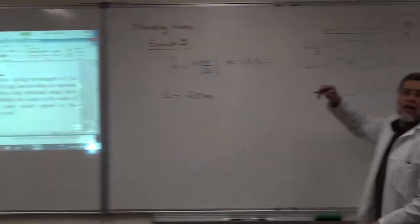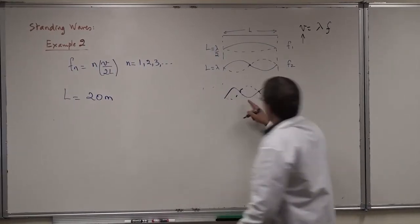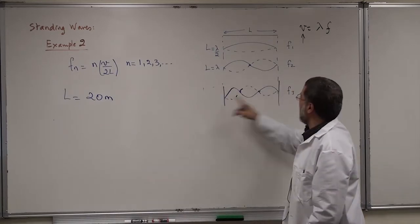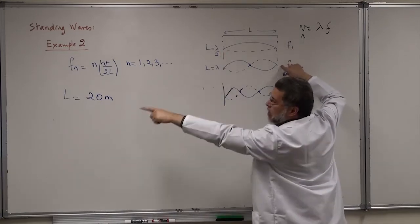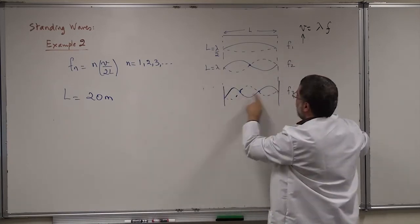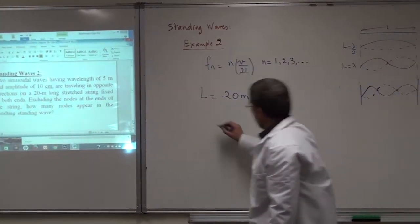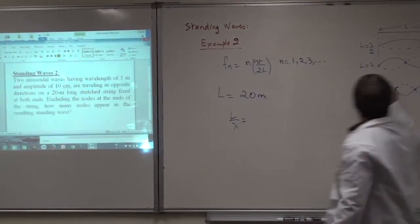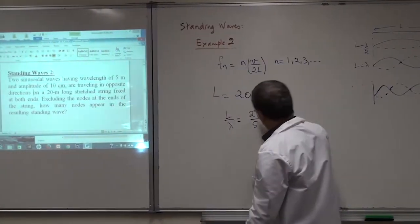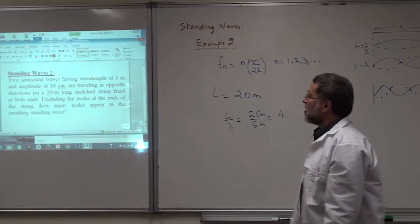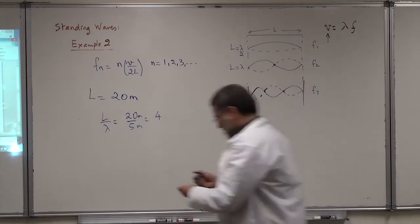Dividing the string length (20 m) by the wavelength (5 m) gives 4 wavelengths. So I draw 4 full wavelength shapes along the string, at positions 0, 5, 10, 15, and 20 meters. The amplitude given in the problem is not needed — only the string length and wavelength are used here.